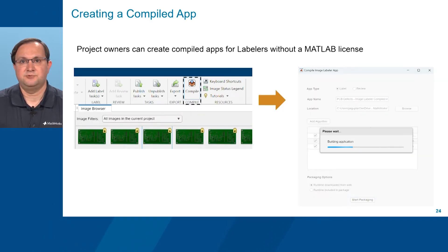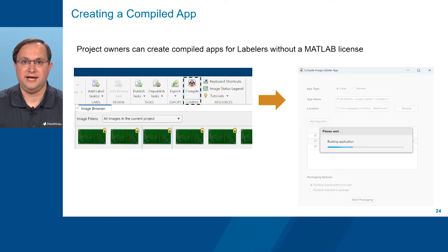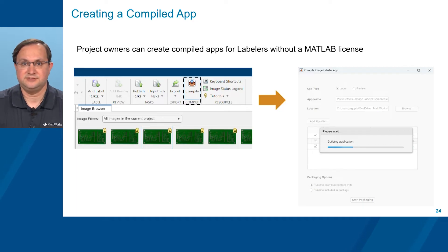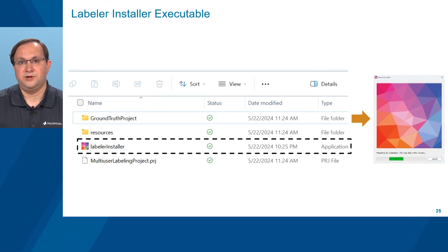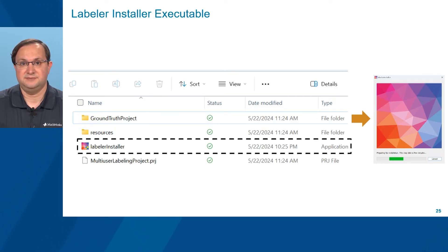As an optional feature, project owners can create compiled apps for labelers who don't have a MATLAB license. When creating a compiled app, the project owner must include any algorithm required for the labeling task in the compilation using the Add Algorithm button; otherwise it will not be part of the compiled app. When ready, the project owner clicks on the Compile button, chooses an app name and file location for the executable, and starts the packaging. Running the labeler installer may take some time, perhaps more than an hour, as the executable file size can be 10 gigabytes or more. When finished, labelers can use the labeler runtime client to conduct their labeling tasks.